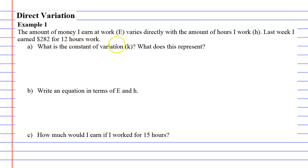Question A says, what is the constant of variation, K? What does this represent? So we've got our formula, Y equals KX.